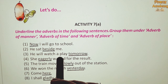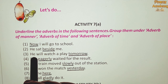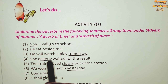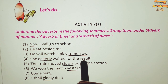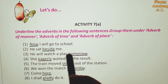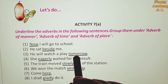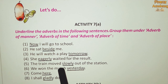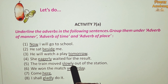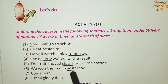He will watch a play tomorrow — 'tomorrow' is the adverb here. Eagerly waited for the result — 'eagerly' is the adverb here. The train moved slowly out of the station — 'slowly' is the adverb here, underline it. We won the match yesterday — 'yesterday' is the adverb here, underline it.